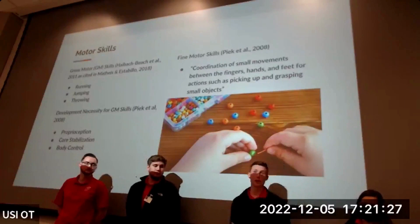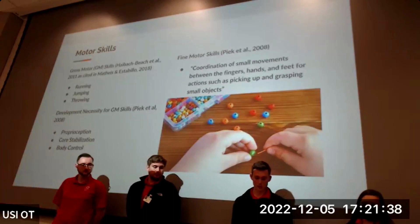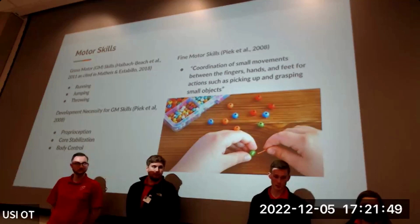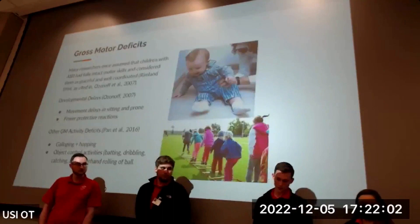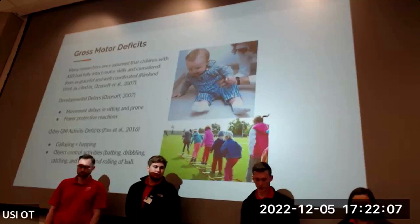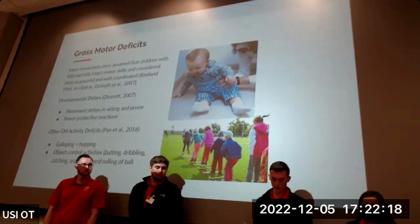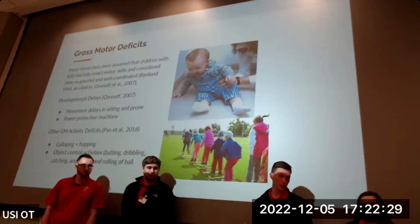Motor skills can be divided into gross and fine motor skills. Gross motor skills involve large movements such as running, jumping, and throwing. Development of these skills is necessary for proper proprioception, core stabilization, and body control. Researchers once considered children with ASD to have fully intact motor function, but many motor deficits have since been identified as early as the first few years of life. Early gross motor deficits include movement delays in sitting and prone positioning as well as fewer protective reactions in infants.